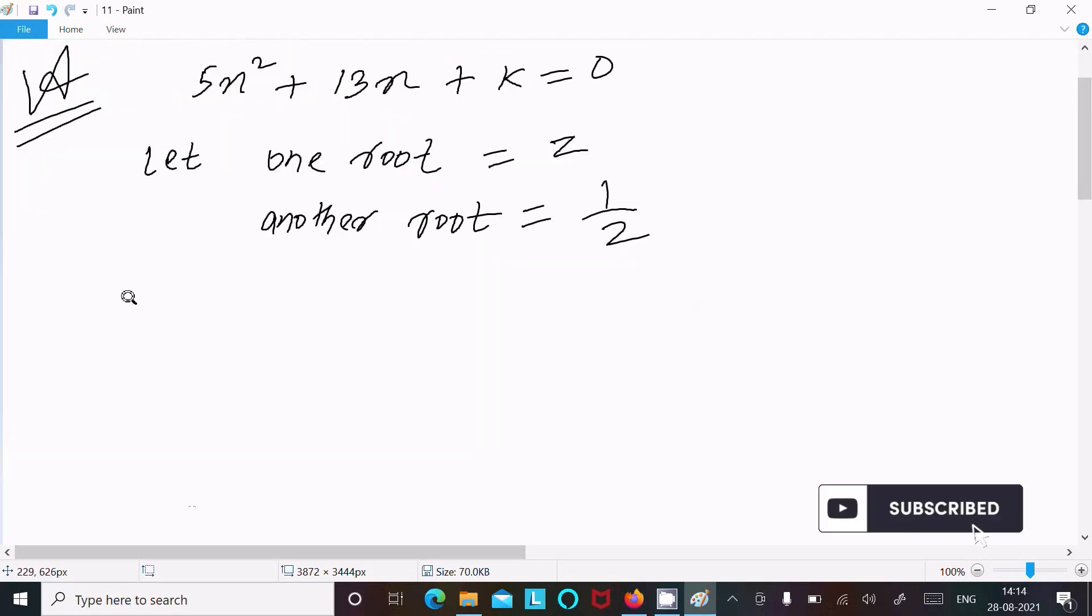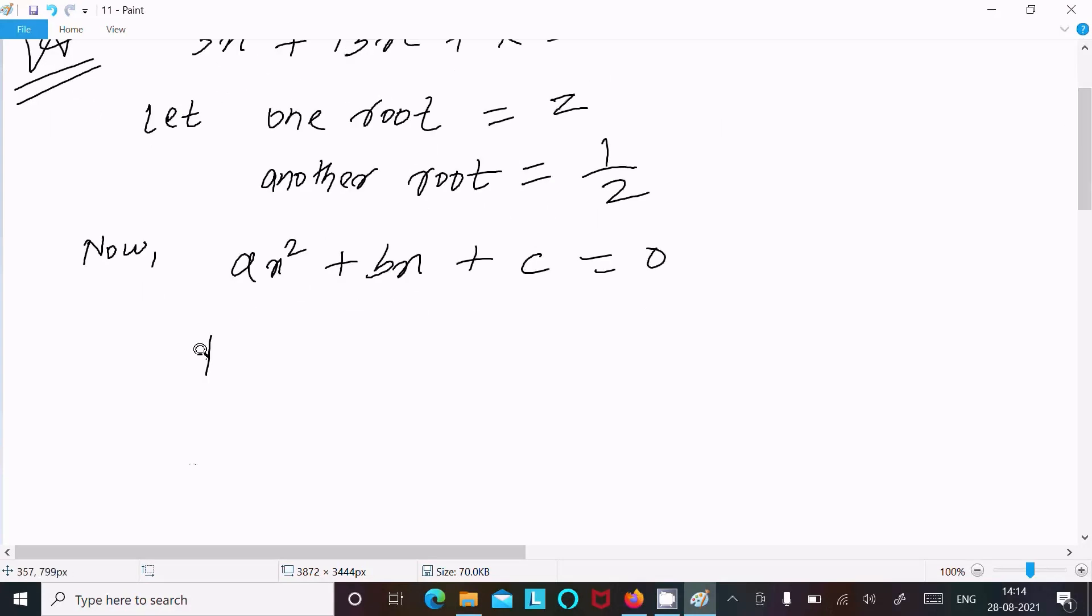Now, the general form of a quadratic equation is ax² + bx + c = 0. The product of roots—we have the formula: product of roots equals c/a. If you don't know, just remember: product of roots is c/a.